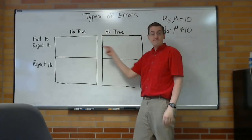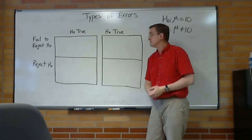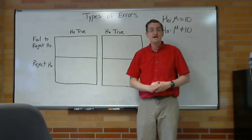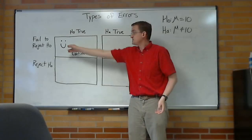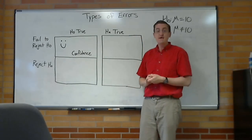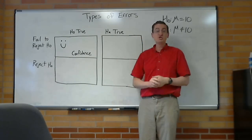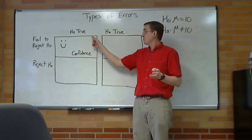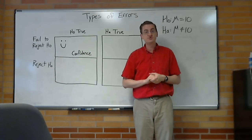So we have four different scenarios. In this scenario, the null was true, and we failed to reject it. That is a good thing. You see the smiley face? It has a name for how often it happens, that is called confidence. We have so much confidence if we fail to reject when the null is true.